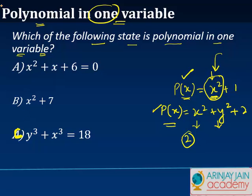Let's look at the first one. In the first one, we have x squared plus x plus 6. 6 is a fixed value and the only other variable that we have here is x. Since there is only one variable, we say that this polynomial is in the state of one variable. So this is a yes.